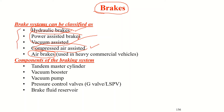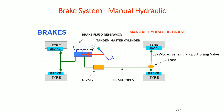Whatever the type of system, each brake system has a tandem master cylinder, vacuum booster, vacuum pump, pressure control valves, and a brake fluid reservoir. These are the main components of the braking system. Let us look at a simple brake system.